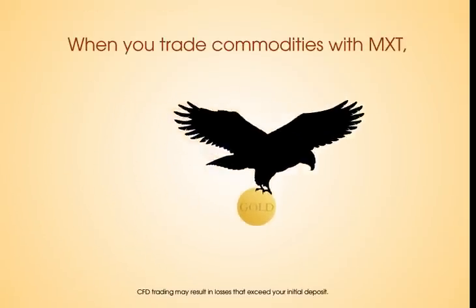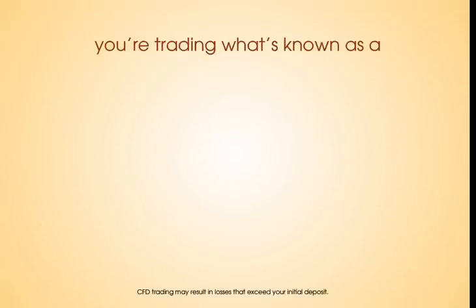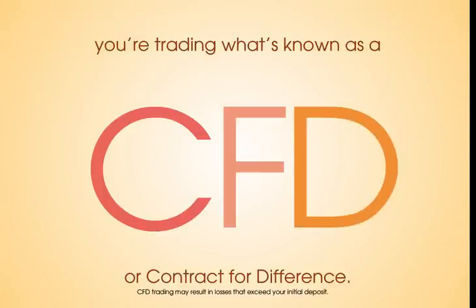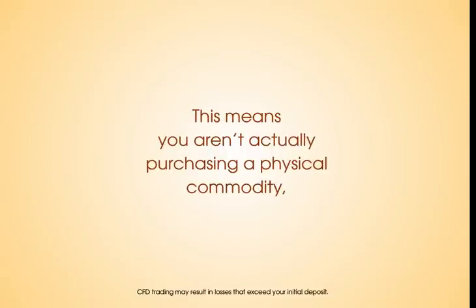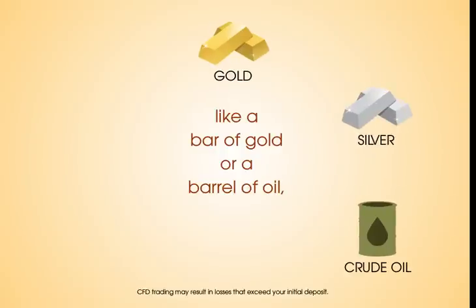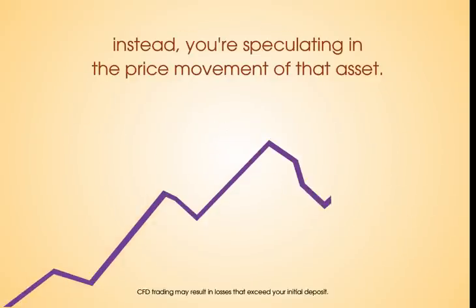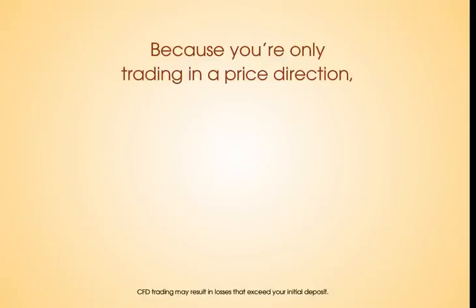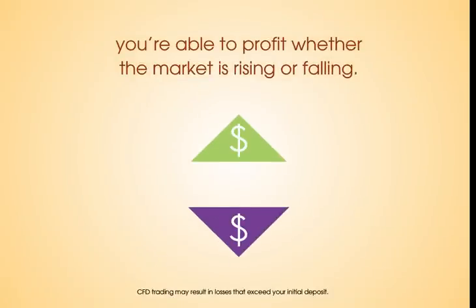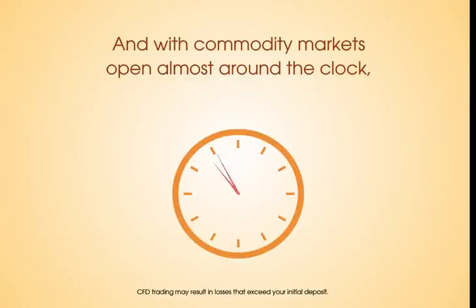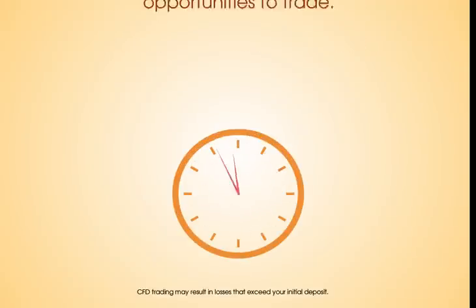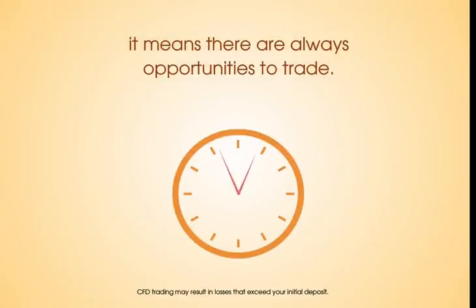When you trade commodities with MXT, you're trading what's known as a CFD, or Contract for Difference. This means you aren't actually purchasing a physical commodity, like a bar of gold or a barrel of oil. Instead, you're speculating on the price movement of that asset. Because you're only trading in a price direction, you're able to profit whether the market is rising or falling. And with commodity markets open almost around the clock, it means there are always opportunities to trade.